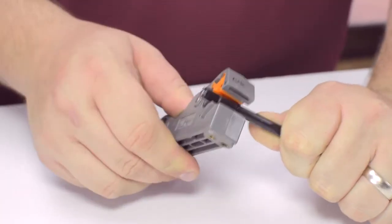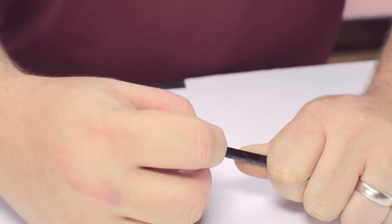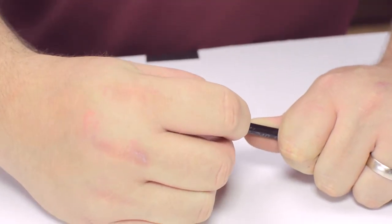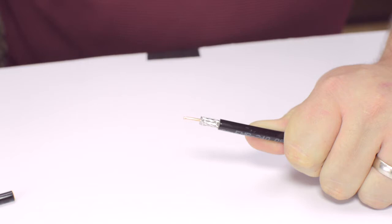Using your cable stripper, strip back the outer jacket and dielectric. The advantage of using a cable stripper is that it will strip back the jacket and dielectric at the same time.